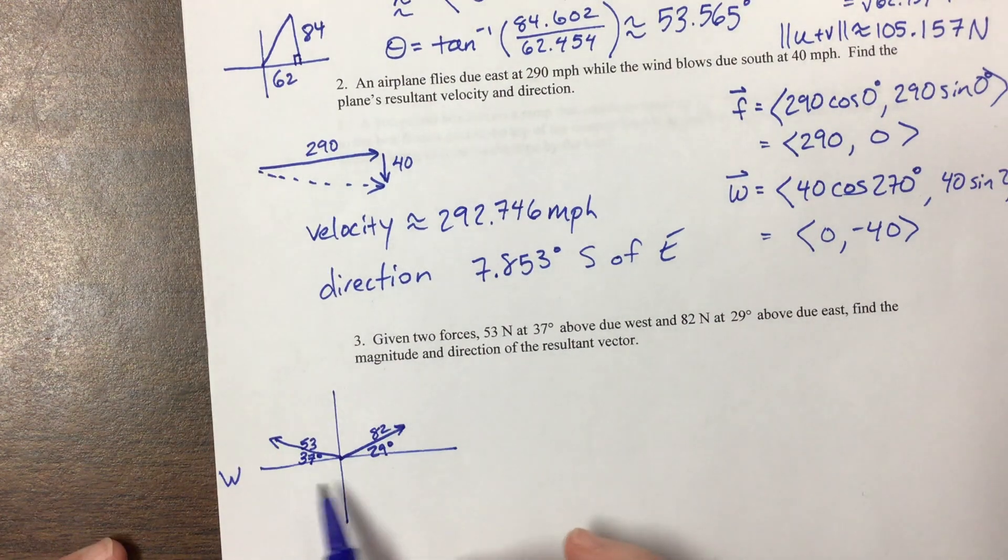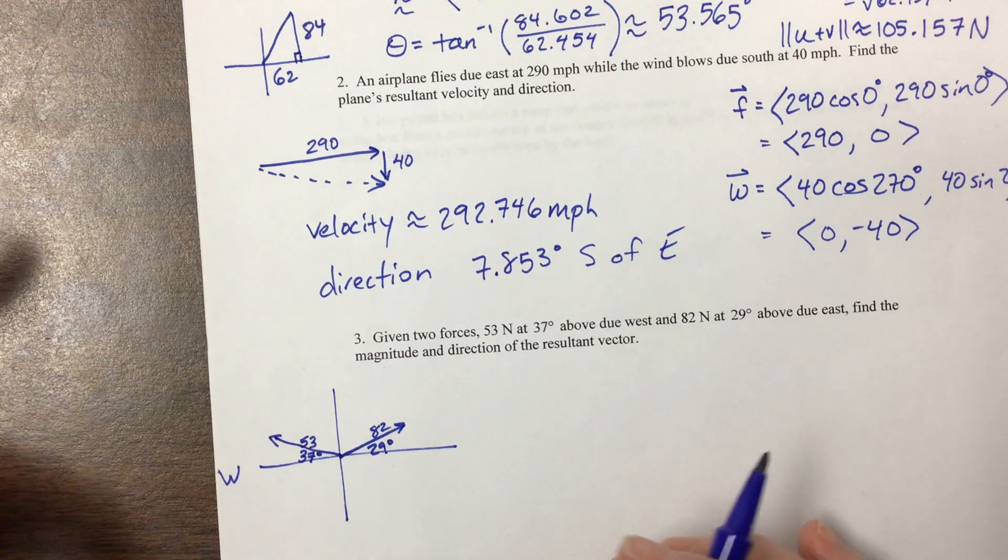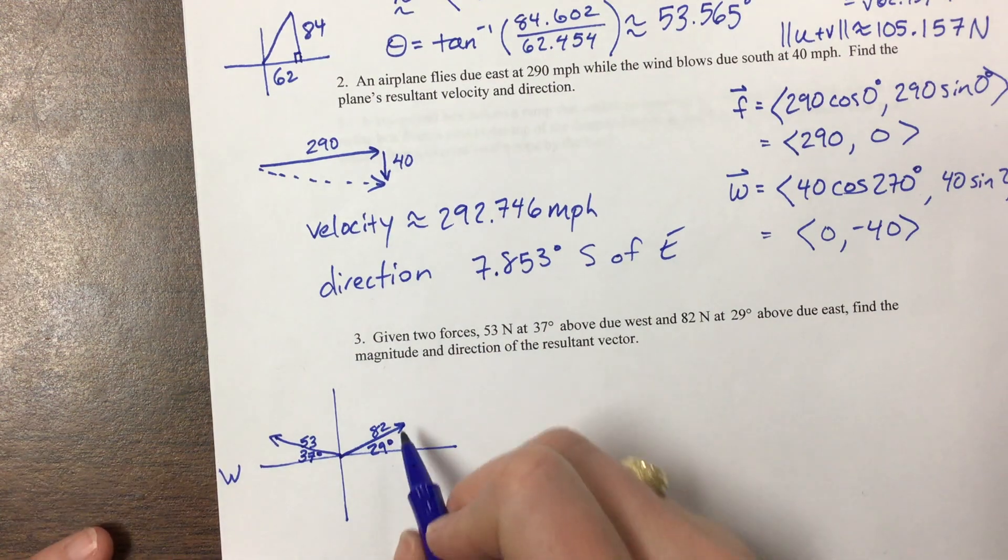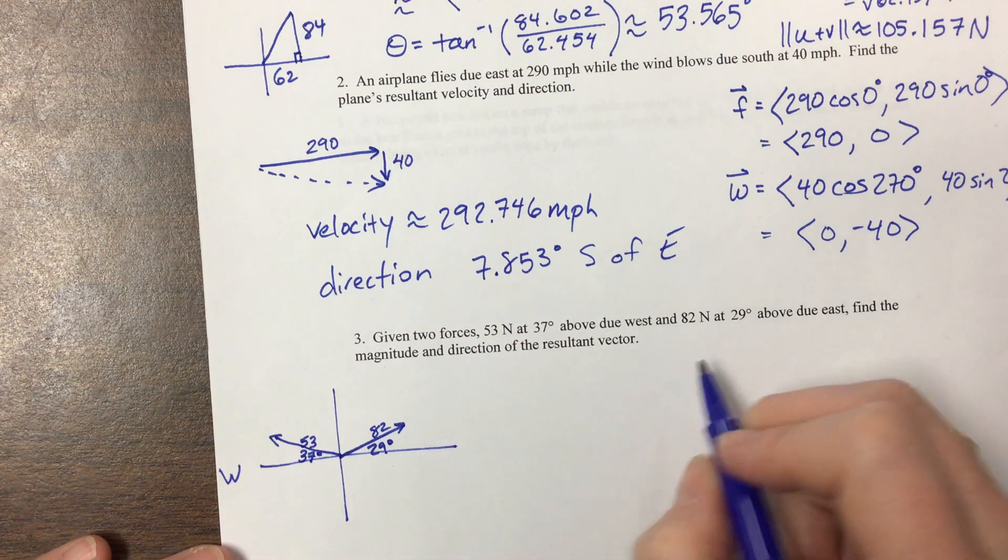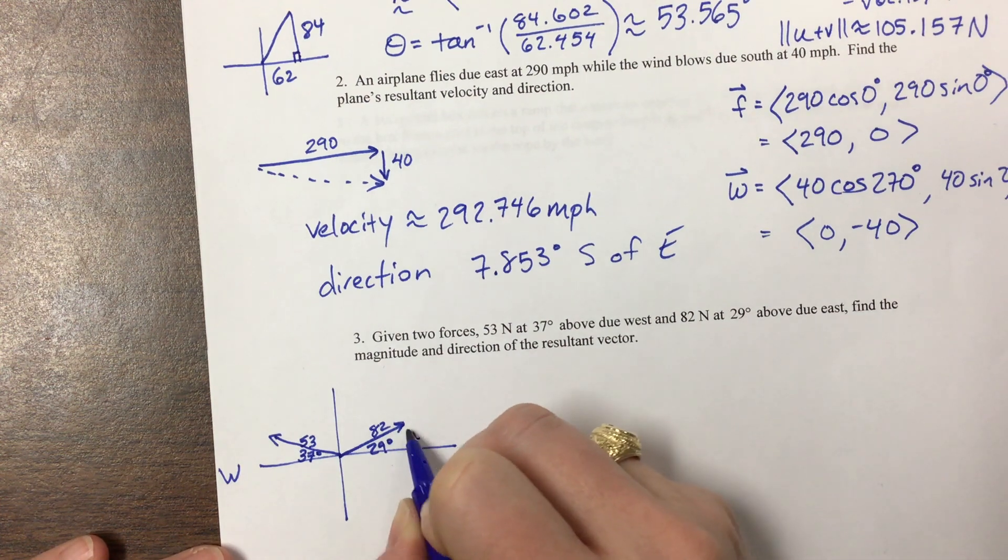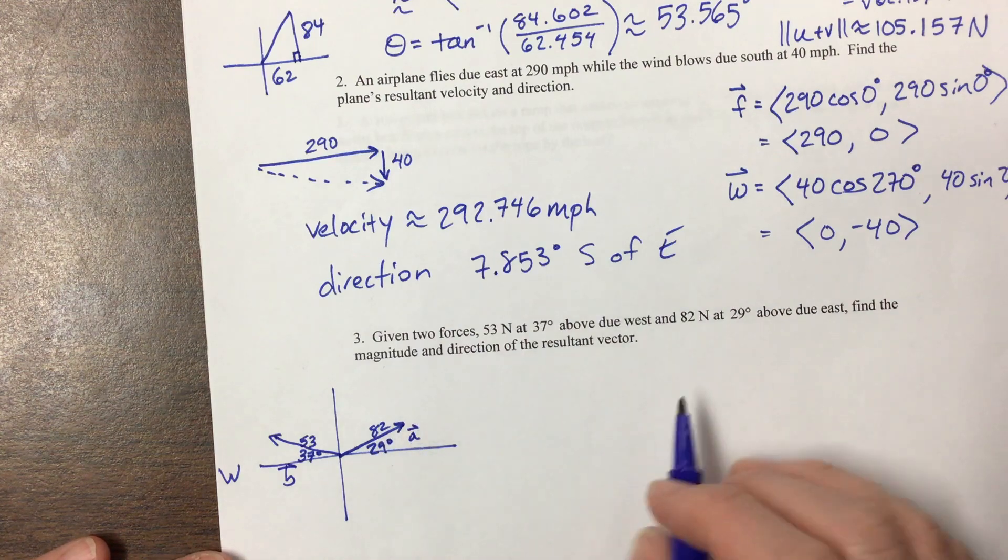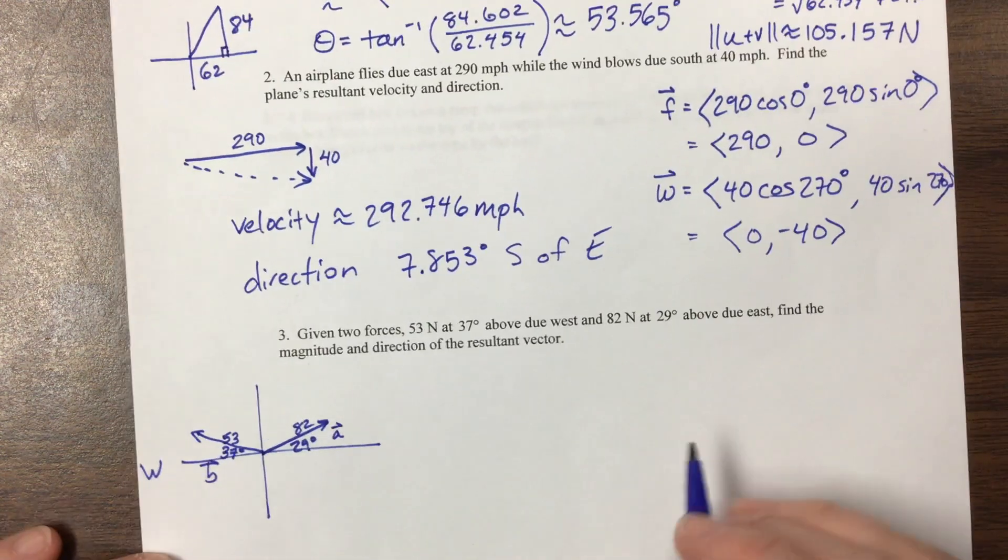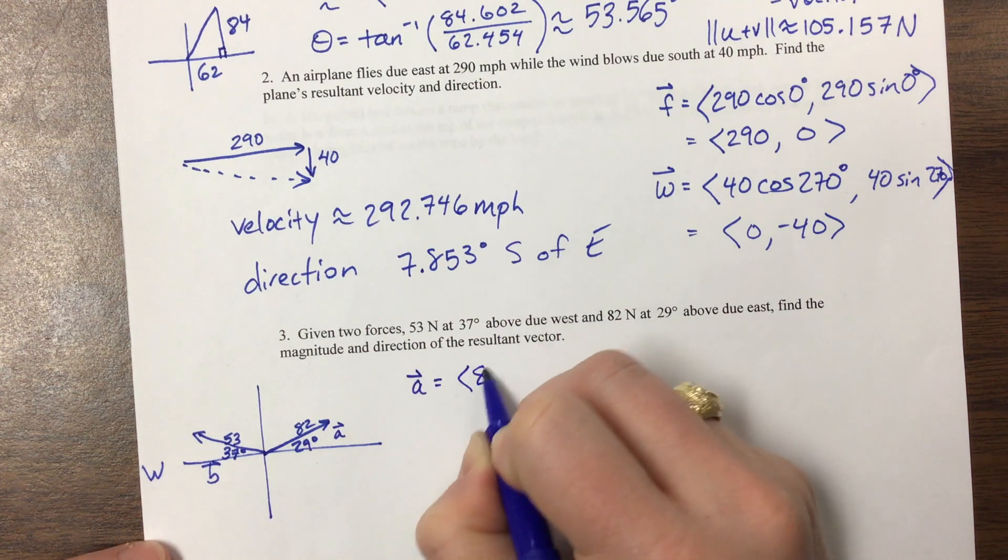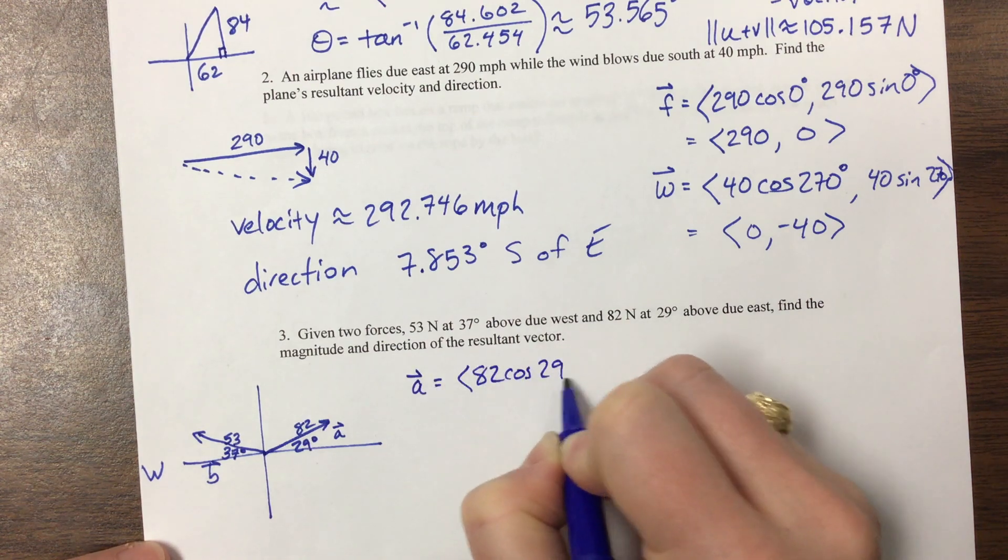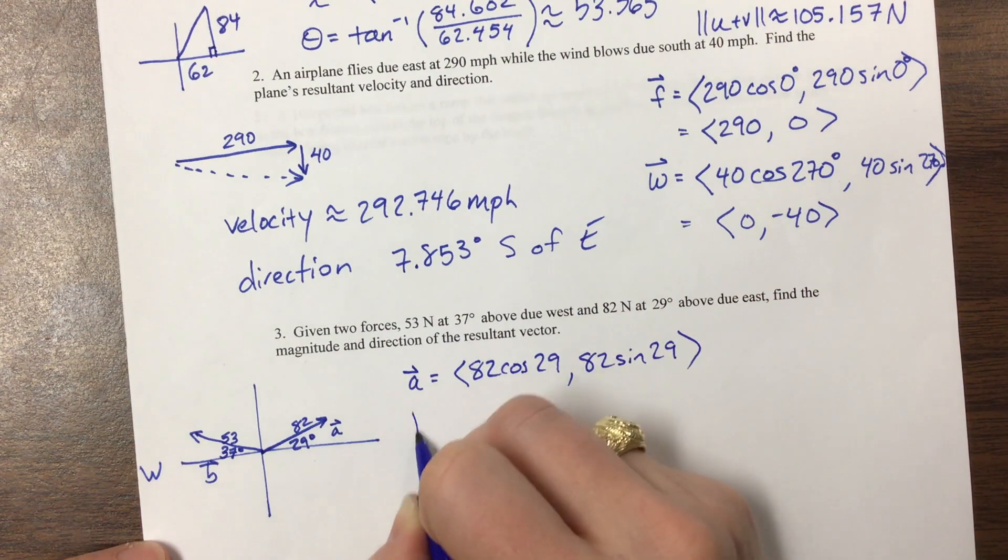Now, we can use law of sine, law of cosine on this, but I wouldn't advise it. So this one, this is a 29 degree angle, so this first one, we'll call this vector A, we'll call this vector B. Do they have names? No. So vector A would be equal to 82 cosine 29, and then 82 sine of 29.